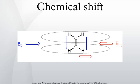Electron density shields a nucleus from the external field. For example, in proton NMR the electron-poor tropilium ion has its protons downfield at 9.17 ppm, those of the electron-rich cyclooctatetraene anion move upfield to 6.75 ppm, and its dianion even more upfield to 5.56 ppm.